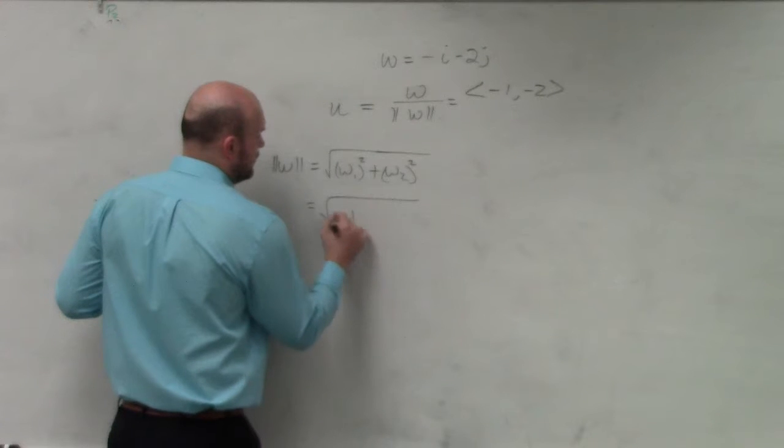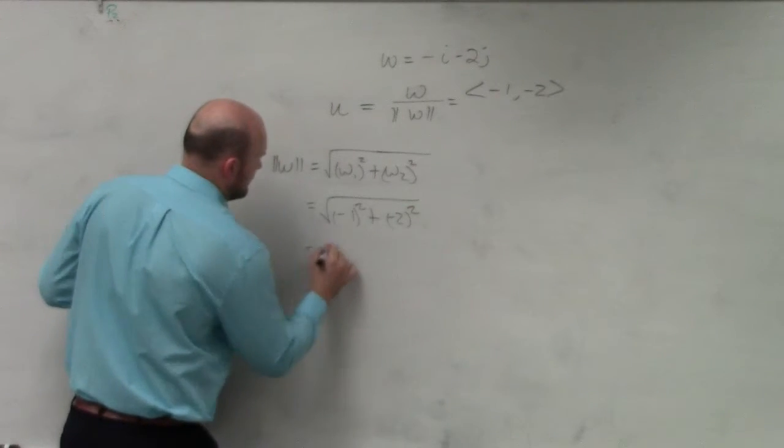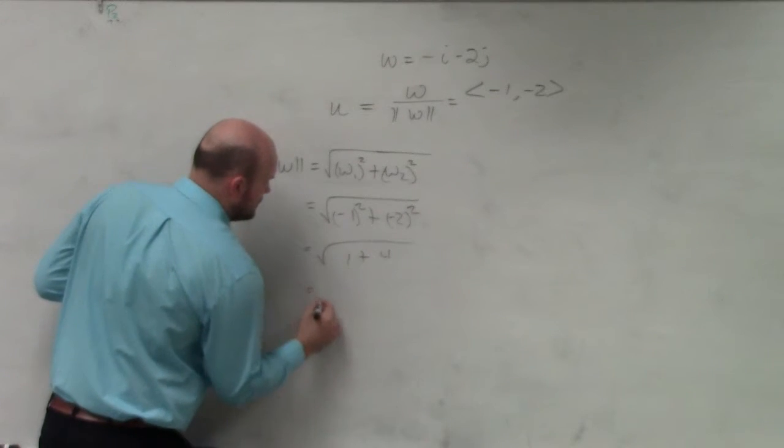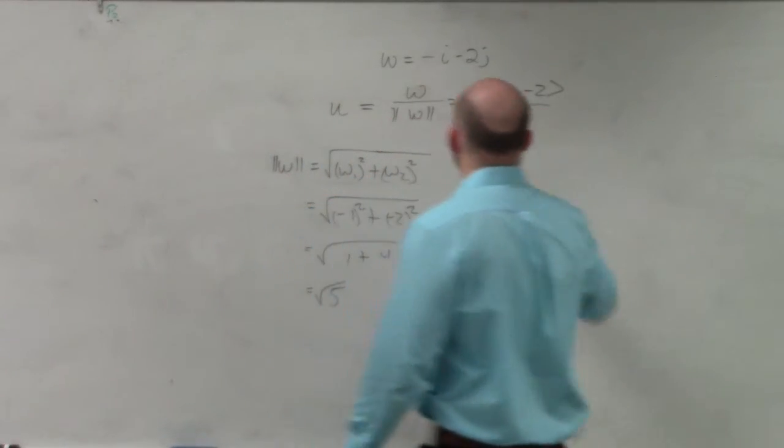So I have negative 1 squared plus negative 2 squared. 1 squared is 1 plus 2 squared is 4. So I'm left with the square root of 5.